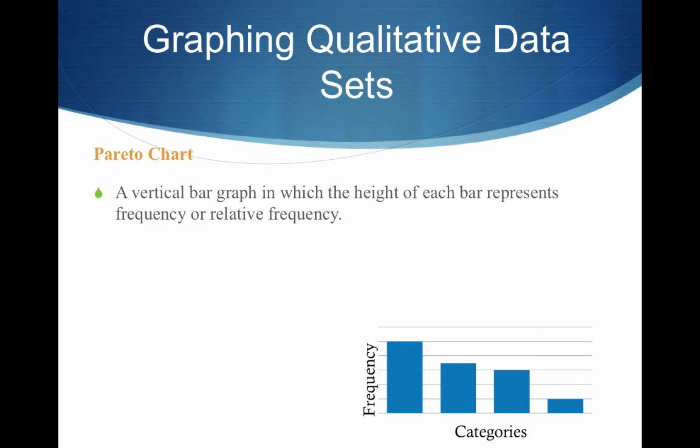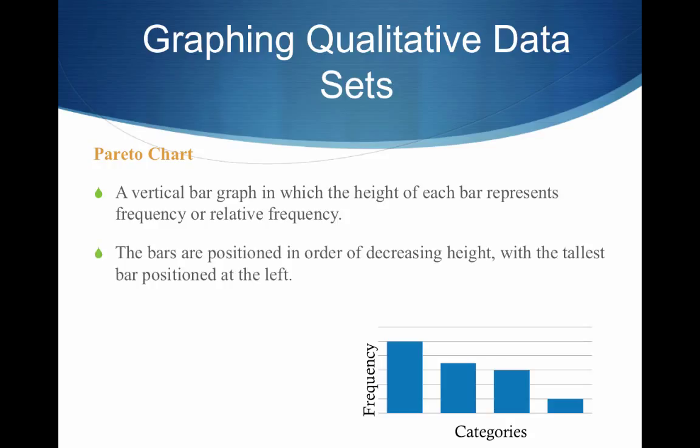All right? Let's talk about a Pareto chart, another way to graph qualitative data. A Pareto chart is a vertical bar graph in which the height of each bar represents the frequency or relative frequency. Now, here's what makes a Pareto special. The bars are positioned in order of decreasing height, with the tallest bar positioned first or at the left. So again, that's important. The bars are positioned in order of decreasing height.